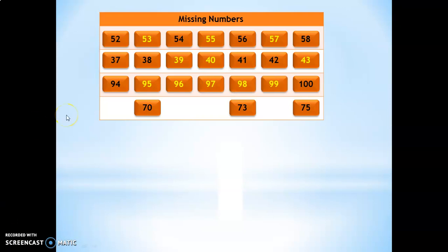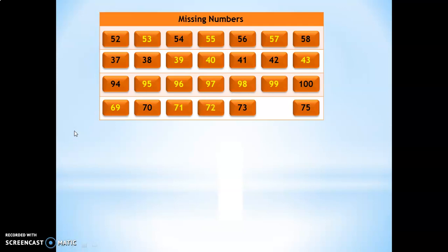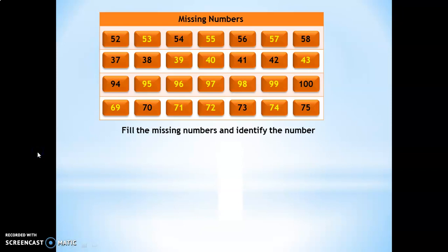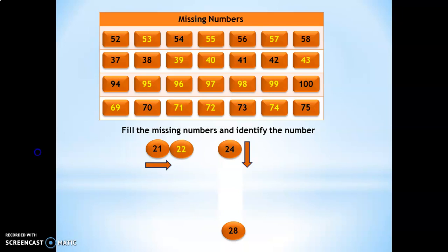One more method: leave the before, after, and in-between numbers blank and make the children fill them up. Before 70 is 69, after 70 is 71, 72, and between 73 and 75 is 74. Now for a quick puzzle with missing numbers: I have given three numbers and the direction to fill. After 21: 22, 23, 24 is given, then 25, 26, 27, and 28. The number you get is 7.